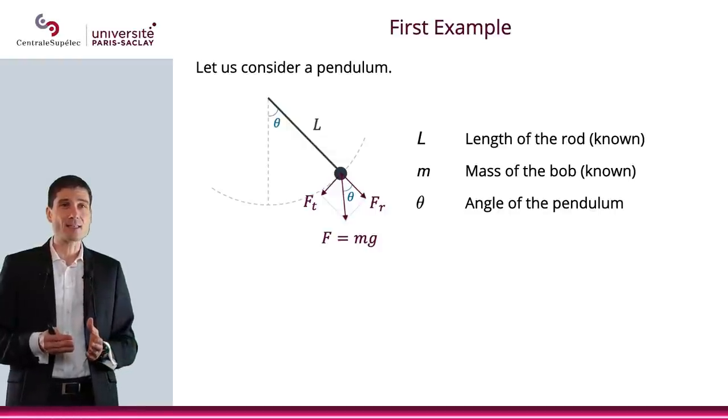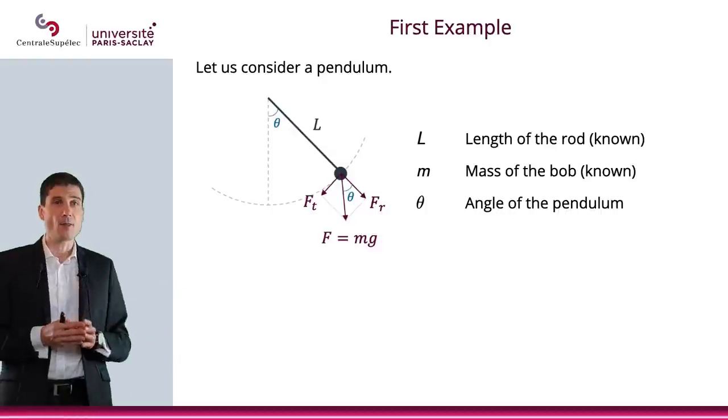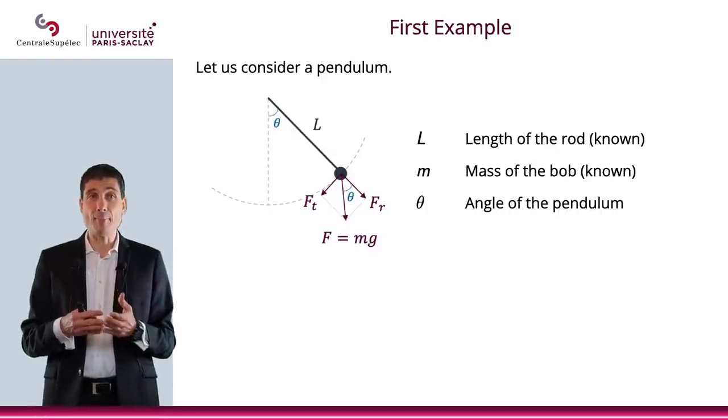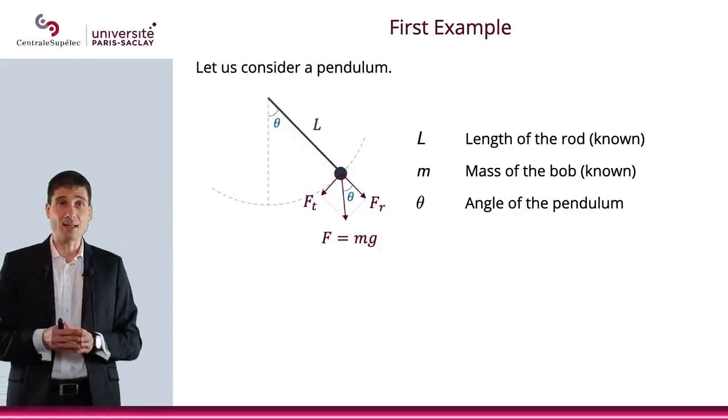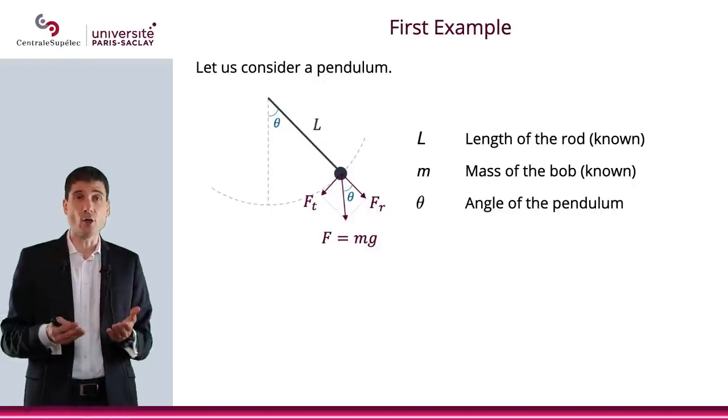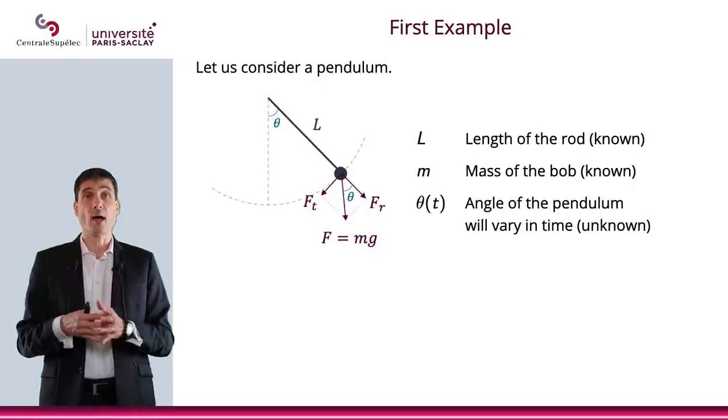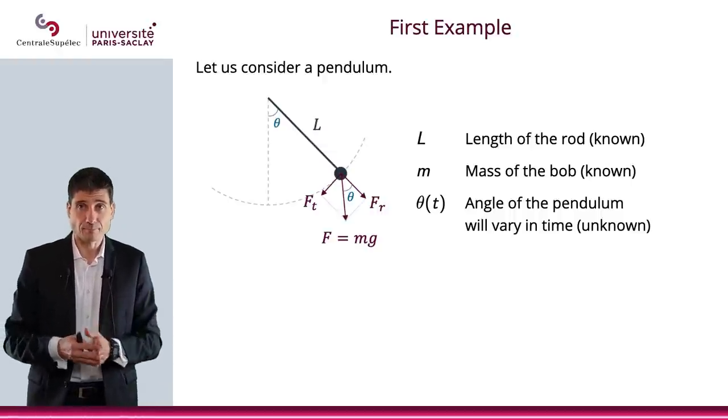What you have is a rod and at the end of the rod you have a bob. The bob has a mass, which will be denoted by small m. The rod has length, which will be denoted L. And the angle of the pendulum, which is the unknown and which will vary with time, is θ(t).